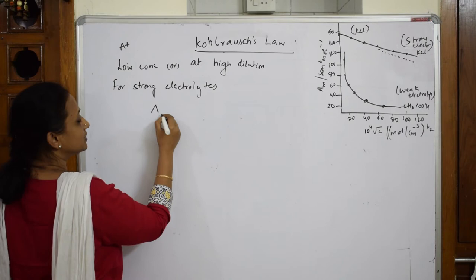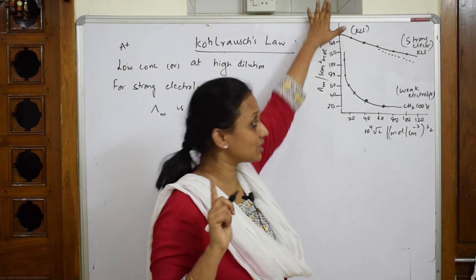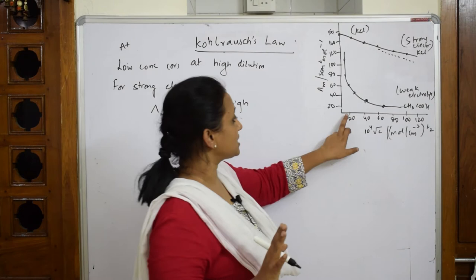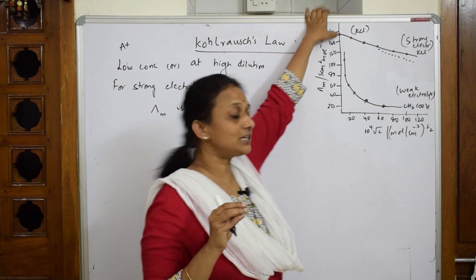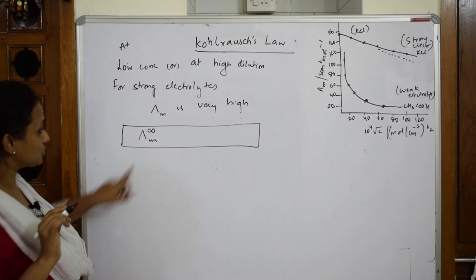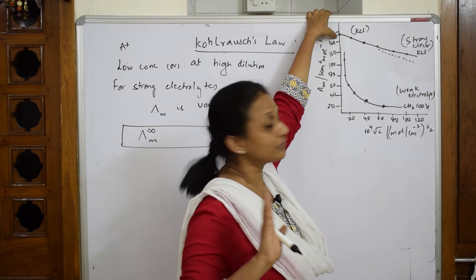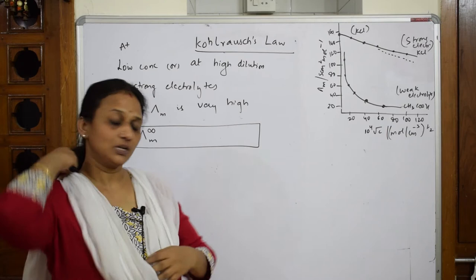Now, when this point is extrapolated — dragging and joining to the y-axis — what you observe is that this is the point of infinite dilution. This infinite dilution is denoted by molar conductivity at infinite dilution. At infinite dilution, the conductivity of KCl, a strong electrolyte, is maximum — here it is almost 150. That is the concept which Kohlrausch has picked up.